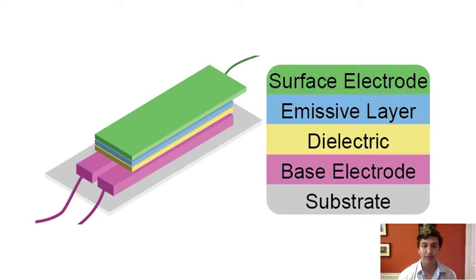Here the substrate or base object is shown in grey on which the other four materials are layered sequentially. First is the base electrode, often a metal-based substance such as copper paint. Then a cohesive layer of dielectric material is applied. The emissive layer is typically a suspension of electroluminescent phosphor. And lastly, the surface electrode is a transparent conductive material that forms an electrical connection and through which the display can be viewed.